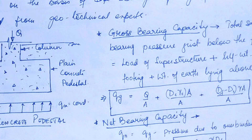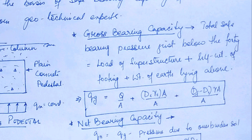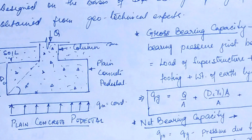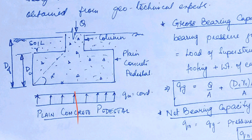This normal reaction is actually your bearing capacity, which is normally assumed to be constant over your footing. Now, if you are talking about gross bearing capacity, it is actually the total bearing pressure just below the footing, and it will be equal to what it needs to balance — the total load coming from above.